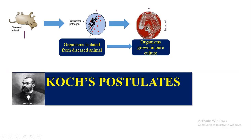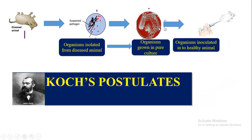The second postulate: from the suspected pathogen, we have to culture it. When we inoculate the suspected pathogen into pure culture, it should be grown.